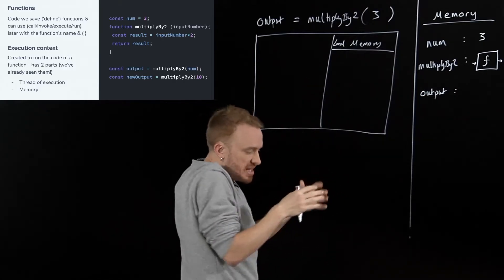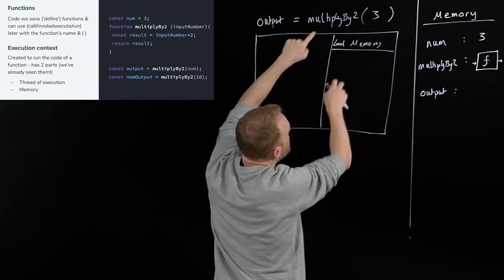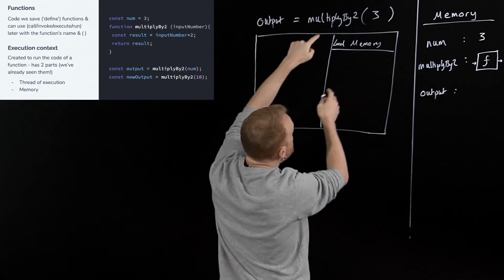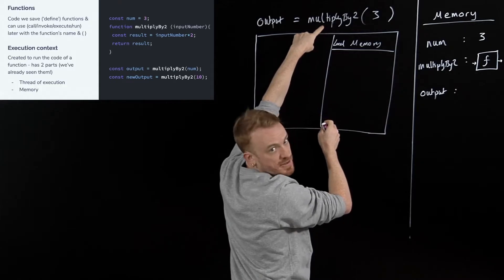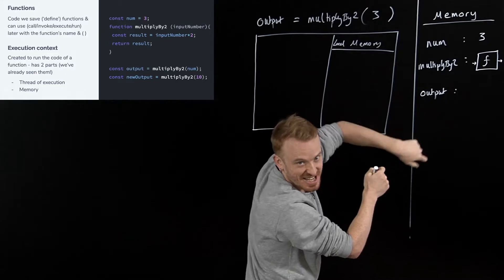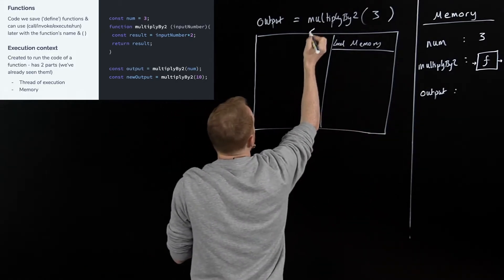a place to store things that get declared inside multiply by two. We call it the local memory because it's just local, meaning nearby. It's just stuff that's going to be available while we're running the code of multiply by two, not available out here. And anything which we declare inside this function, any variables, stored in here, not in here. All right.